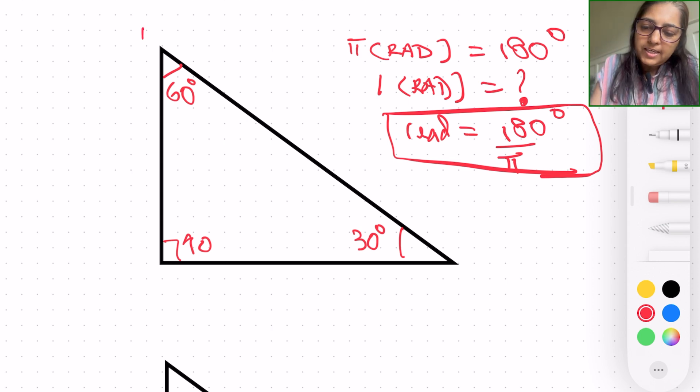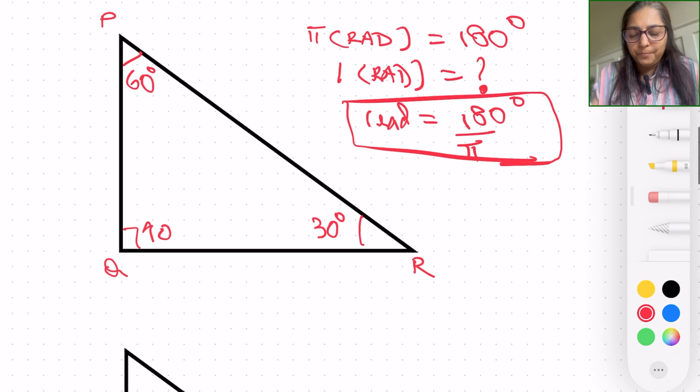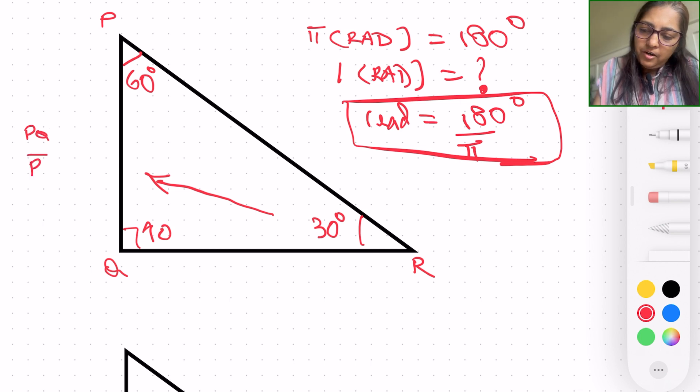Let's go ahead and label this as P, Q, and R. So if I were to measure sine of 30, where will I go? Sine of 30: opposite is going to be PQ, and hypotenuse is PR. And this is going to be sine of 30.